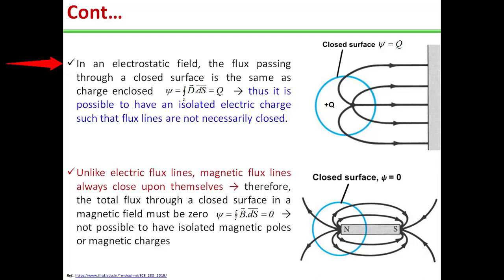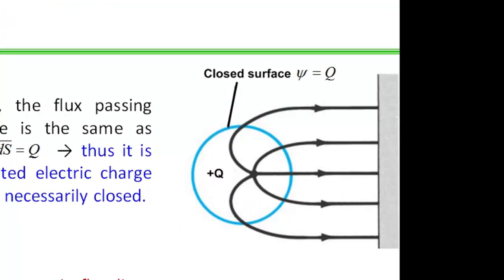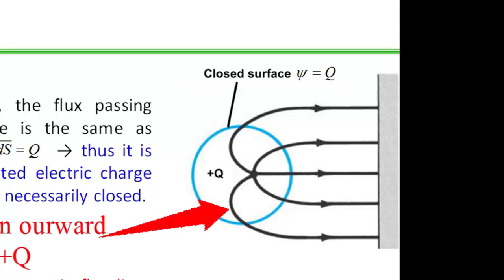Now, in an electrostatic field, the flux passing through a closed surface is the same as the charge enclosed by the surface. So we can write ψ equal to closed surface integral D dot ds, and this will be equal to Q. Thus, it is possible to have an isolated electric charge, such that flux lines are not necessarily closed. The positive charge is placed and enclosed by the surface, and the electric field lines are in the outward direction. So if we have an isolated charge, either positive or negative, the electric field line will always be there — in the outward or inward direction respectively.